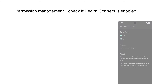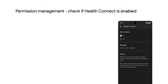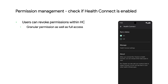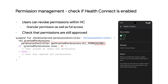In order to check what permissions have been granted to your app, you can call Get Granted Permissions on the permission controller object. Keep in mind that users can revoke permissions within HealthConnect, both granular permissions as well as full access. So even if you had been previously granted a permission, you will want to check that permissions are still approved.